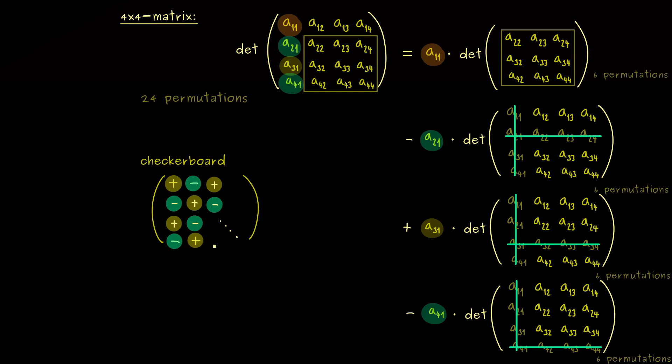Indeed, you see, the whole splitting up of the permutations, we also could have done with the first row here. Or even with another row or another column. And exactly this calculation, by using one row or one column, is called the Laplace expansion.